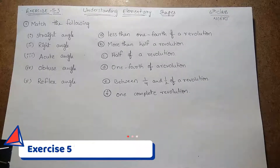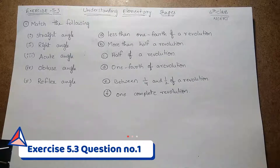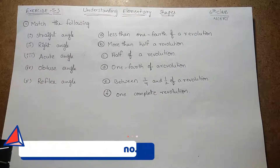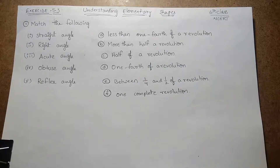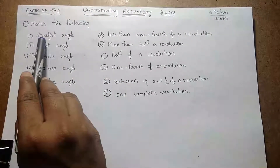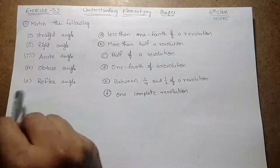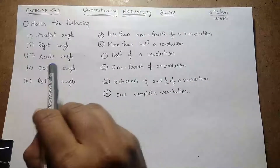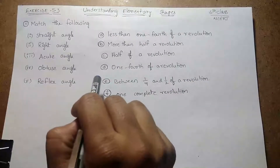Hi, hello, welcome to Maths Medium. Today I came with an exercise problem from Exercise 5.3 from the topic 'Understanding Elementary Shapes' belonging to sixth class in CBRT. The question was 'match the following' — angles on one side and how we represent them on the other side, and we have to match these two elements.